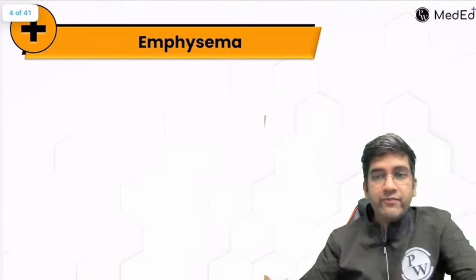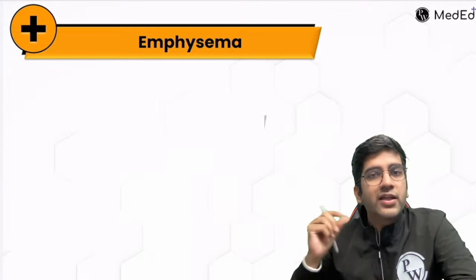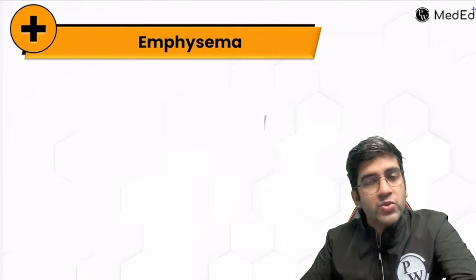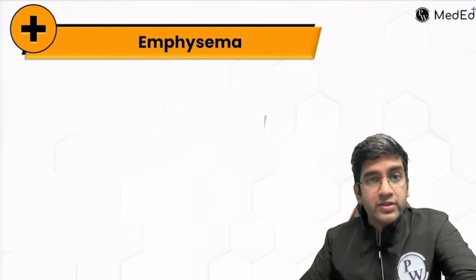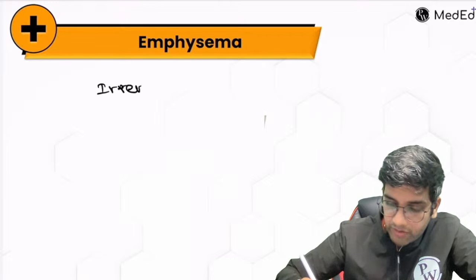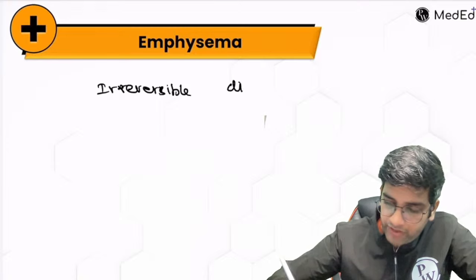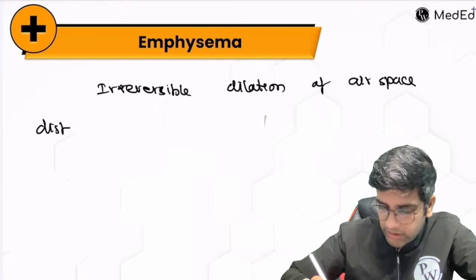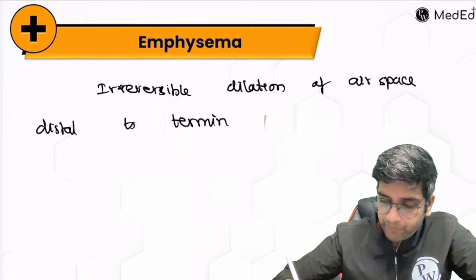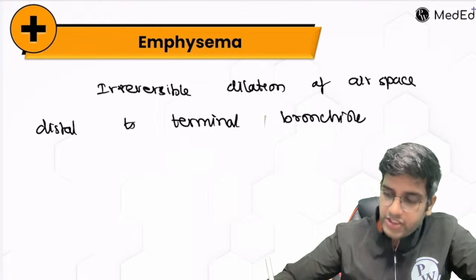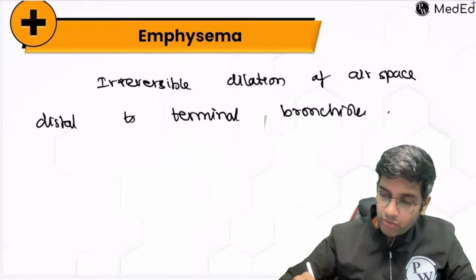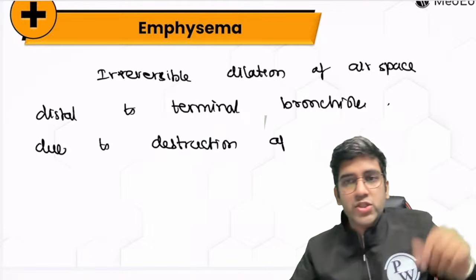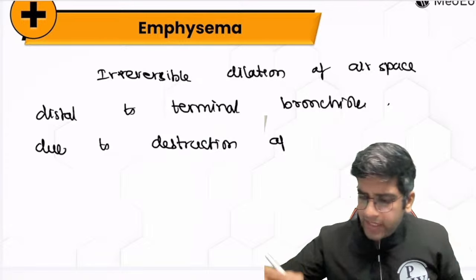Let's take emphysema first. Emphysema is an irreversible enlargement — or permanent dilatation — of the air spaces, called acini, distal to the terminal bronchiole. It is accompanied by destruction of the vessel wall. The most important things to use accurately in the definition are: irreversible, dilatation, air spaces, distal to terminal bronchiole, and destruction of the wall.